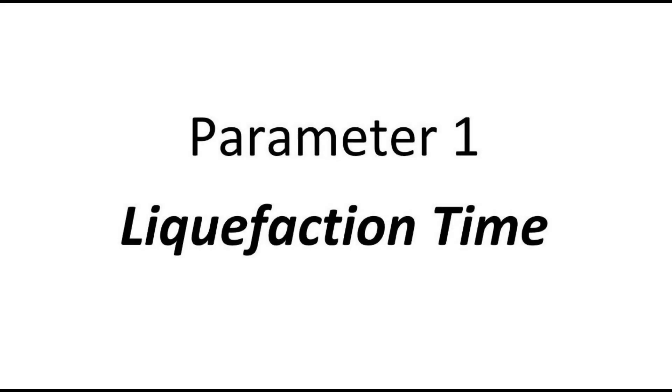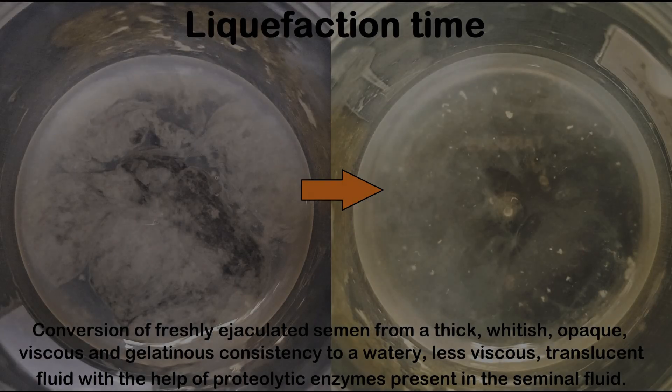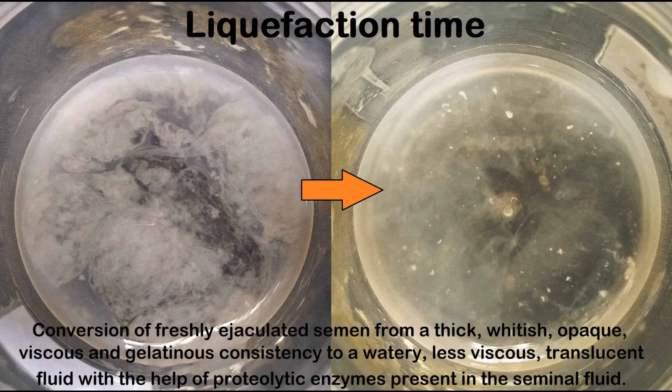The first and foremost parameter in semen analysis is the liquefaction time. Liquefaction of semen is the process that results in the conversion of freshly ejaculated semen from a thick, whitish, opaque, viscous, and gelatinous consistency to a watery, less viscous, translucent fluid with the help of proteolytic enzymes present in the seminal fluid. Liquefaction time is the time taken for this conversion process to occur.